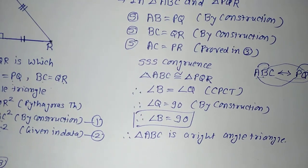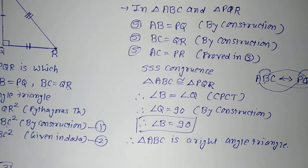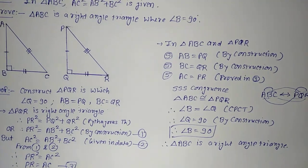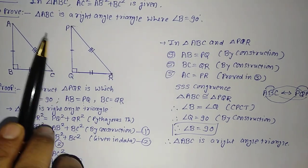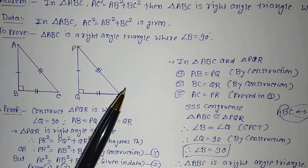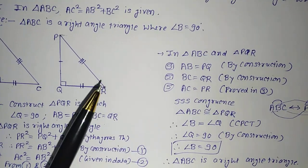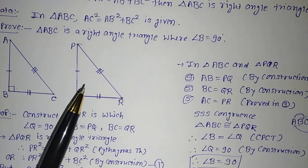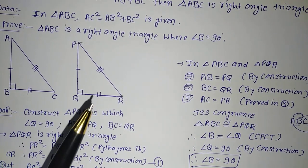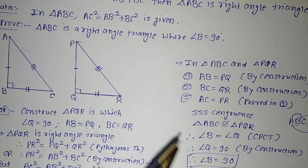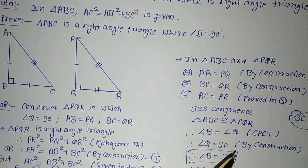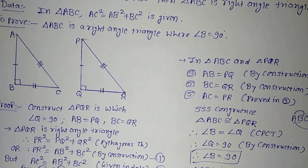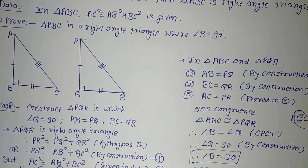This is how you can prove the Converse of Pythagoras theorem. If you like this, click the like button and share with your friends so they can also get full marks. Always prepare theorems with understanding of the concept — if the triangle names are changed in the exam, you can still solve it easily. Don't just rote memorize; if you do and the triangle is changed, you will be in trouble. Prepare concept-wise and you will easily get 4 to 5 marks.